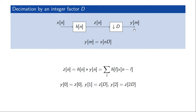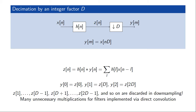This would be a very inefficient way of implementing such a circuit, because we would be computing a lot of values of Z of n which are then immediately discarded in building Y of n. So we would do the convolution for a lot of values of Z of n that we would never use.